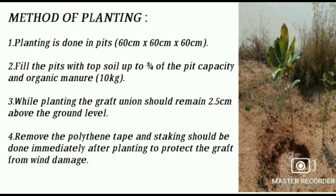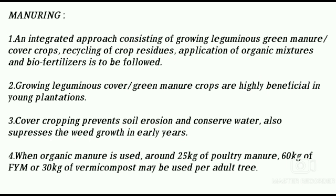As you can see in the picture, the pit is filled with organic manure up to three-fourths of its capacity. Remove the polythene tape and staking should be done immediately after planting to protect the graft from wind damage. Manuring: an integrated approach consisting of growing leguminous green manure or cover crops, recycling of crop residues, application of organic mixtures and biofertilizers is to be followed. Growing leguminous cover crops is highly beneficial in young plantations. When organic manure is used, around 25 kg of poultry manure, 60 kg of FYM, or 30 kg of vermicompost may be used per adult tree.